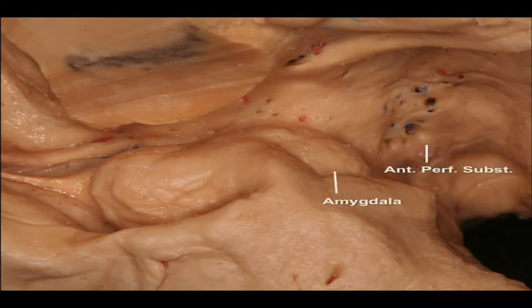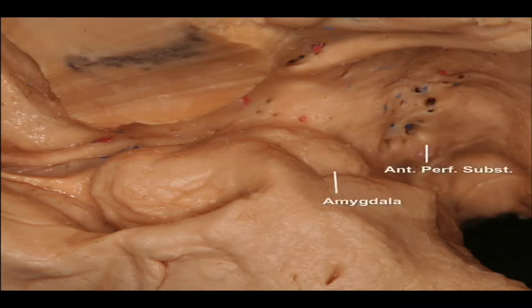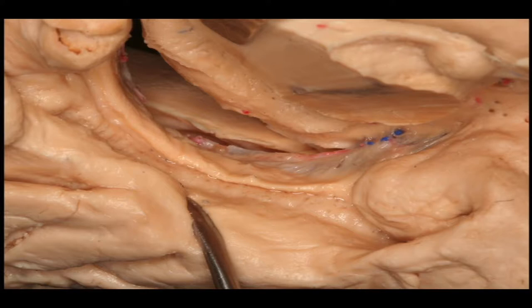Looking at the uncus anatomy, we can identify the amygdala, and above the amygdala, the important anterior perforated substance. Looking again at the choroidal fissure and the fimbria, all of these are key anatomical features.